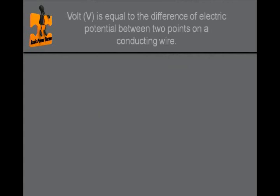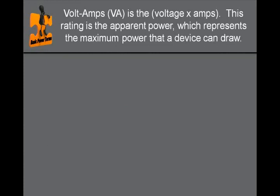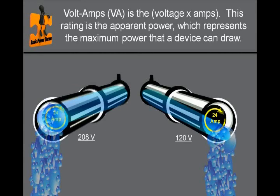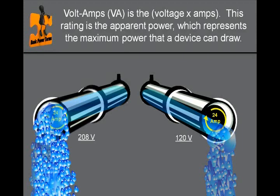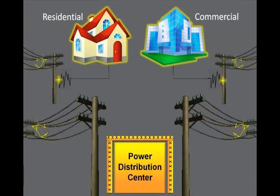Volt is equal to the difference of electrical potential between two points on a conducting wire. Using the water flowing analogy, volts is the pressure that is pushing the water through the pipe. Volt-amps is the voltage multiplied by the amps. This rating is the apparent power, which represents the maximum power that a device can draw. Using the water flowing analogy, volt-amps is the total amount of water flowing through the pipe. When volt-amps are measured in thousands, they are frequently expressed as kilovolt-amps or kVA. An example is 2000 volt-amps equals 2 kVA.